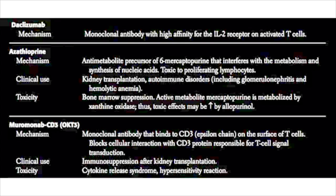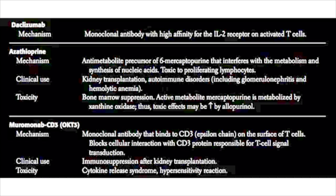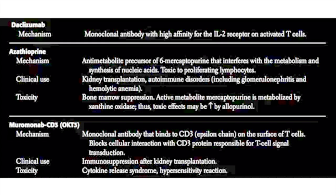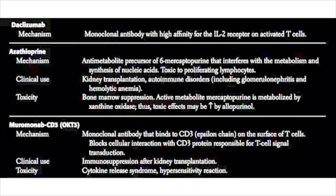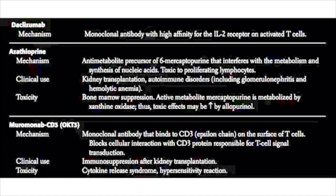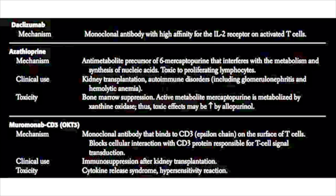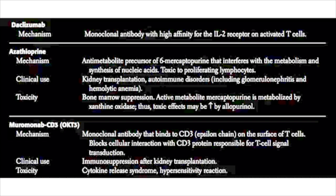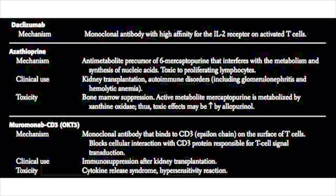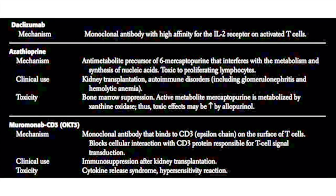Next, we have muromonab, also known as OKT3. It targets CD3, a molecule very important for intracellular signaling. If you block CD3, T cells are not able to receive signals and therefore cannot mount any immune response. Because it is so powerful and stops the immune system so potently, it is only used for immunosuppression immediately following transplantation surgery — literally only in the first day or two — and to treat an episode of acute rejection. Major toxicity is cytokine release syndrome, which creates significant inflammation and damage. This can occur because when first administered, the drug can initially cause some T cell activation before causing T cell suppression.